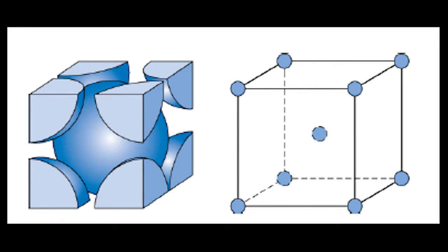If we add up all these, one-eighth times eight, and one in the center, we get two. That is our n value. The n value for a BCC crystal structure is equal to two.